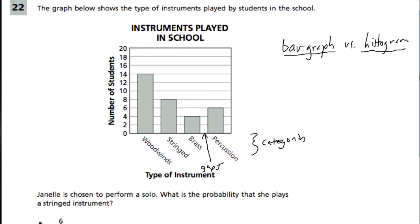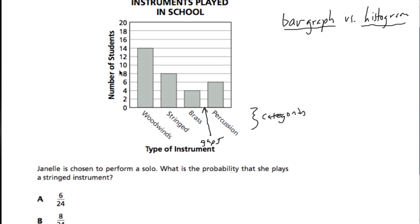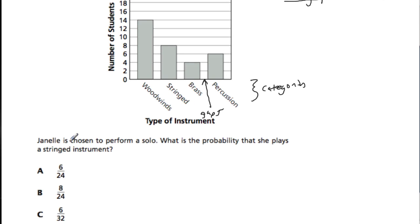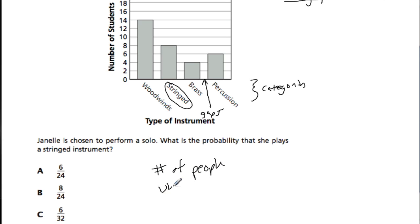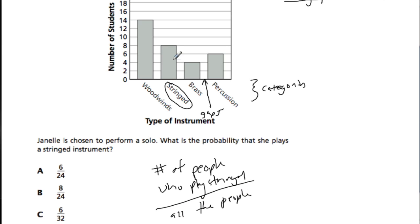Here's a pretty typical problem. We have a number of students and the types of instruments they're playing, and the question is: what's the probability that she plays a stringed instrument? Here are the stringed instruments, and to find the probability we should take the number of people who play stringed out of all the people who play all the instruments.